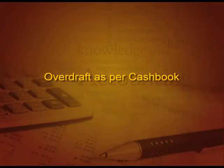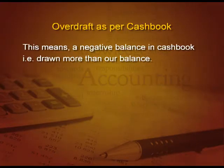Now we will discuss some more multiple choice and fill in the blanks at the end. For now, we are going to start method number three — that is overdraft as per cash book. This means a negative balance in the cash book, that is, we have drawn more than our balance. Here also, we will think in the same fashion as in case of favorable balance.